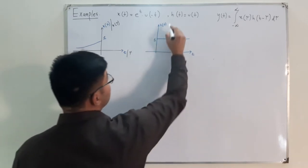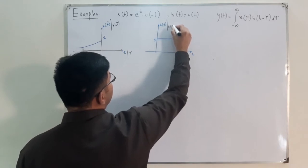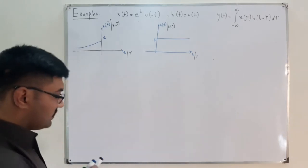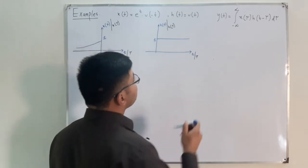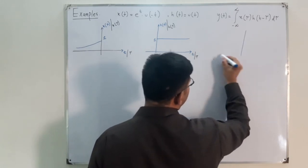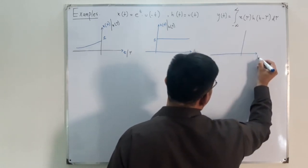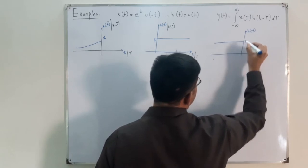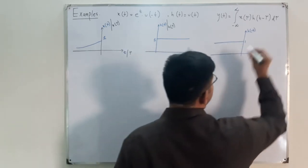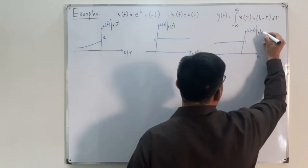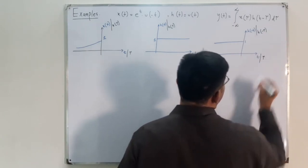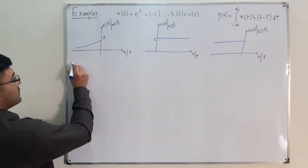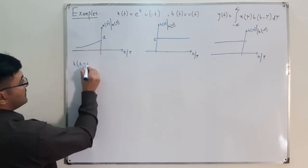Now we represent h in terms of τ, and then find h(-τ) by flipping around the y-axis. This gives h(-t) = 1 for negative values of t. Similarly, h(-τ) is 1 for negative values of τ. The next step is shifting: we need to find h(t - τ), and depending on the sign of t, the shifted version ends at τ = t.